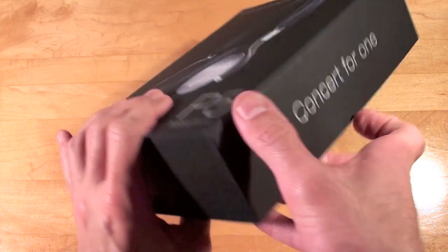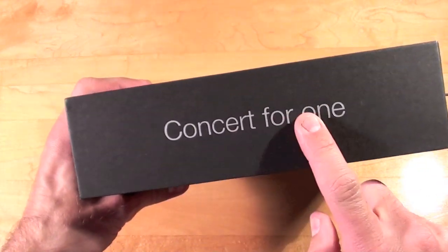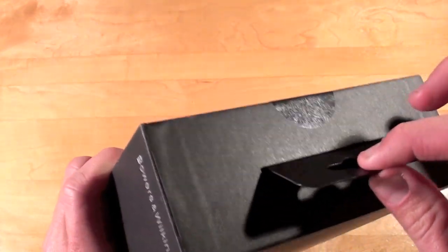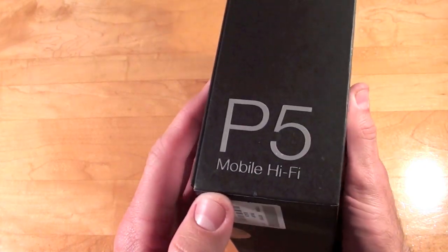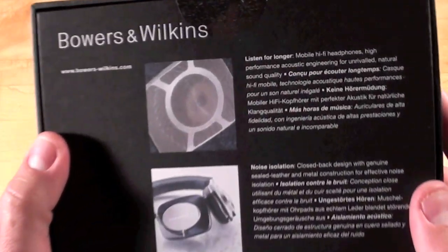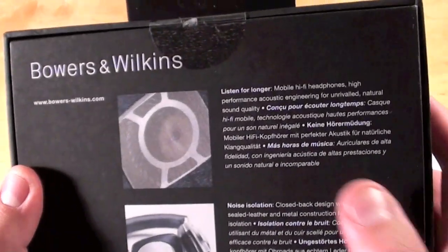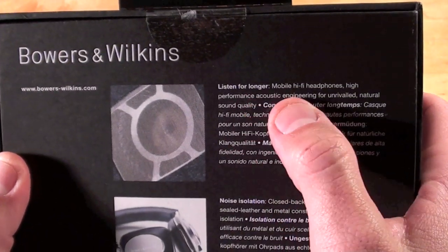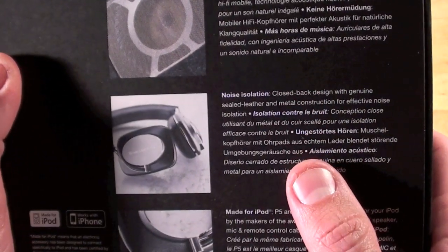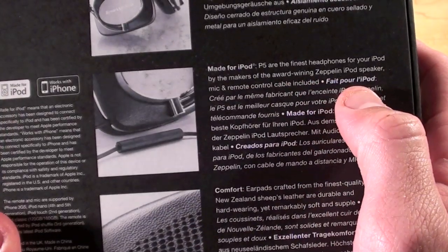Take a look around the packaging. We can see their slogan on the side, "concert for one," along with the hang tag for these to hang in the store. Bowers & Wilkins P5 Mobile Hi-Fi on the other side, and on the back we have some information about the product including reference to the noise isolation properties of the headphones and the fact that they are made for iPod.